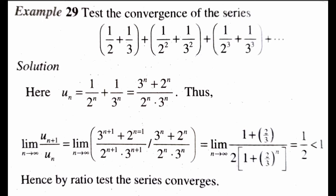The second example: test the series 1/2 + 1/3 + 1/2² + 1/3² + 1/2³ + 1/3³ + ... Here the nth term u_n equals 1/2^n + 1/3^n, which equals (3^n + 2^n) / (2^n × 3^n). Thus we compute the limit as n tends to infinity of u_(n+1)/u_n.